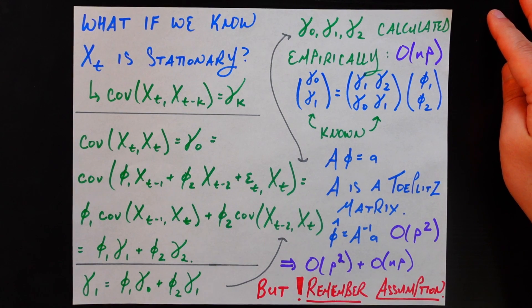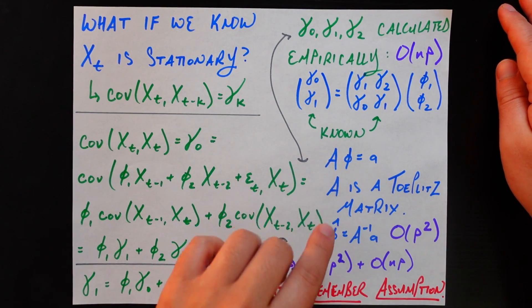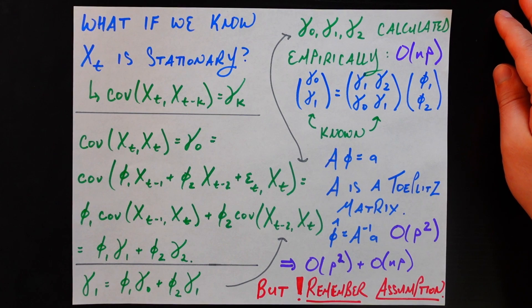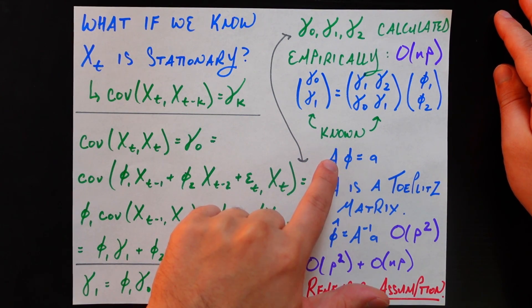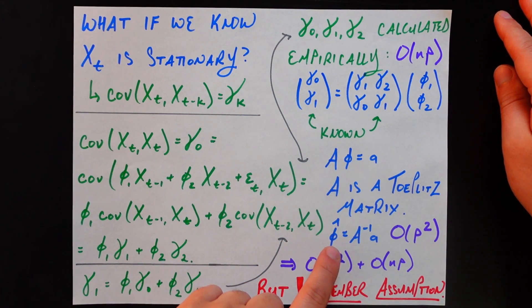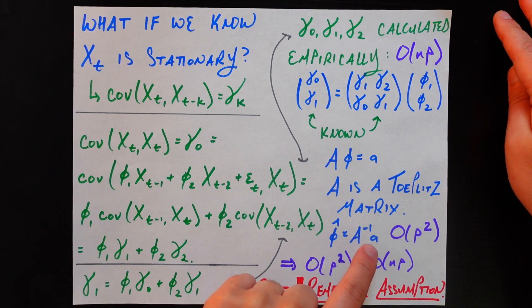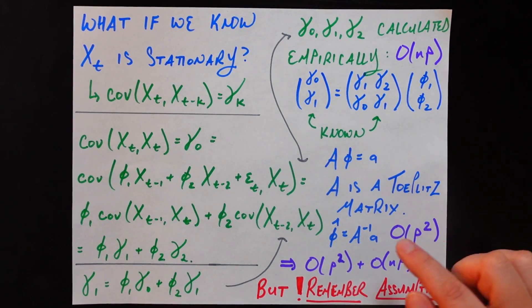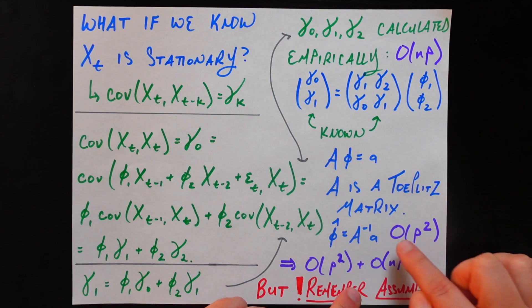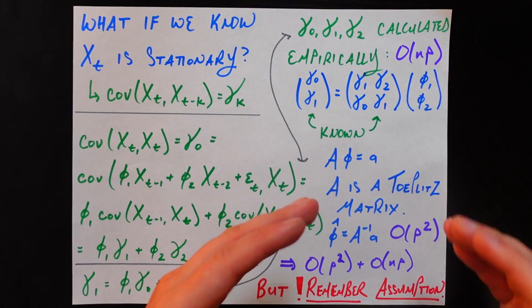So what that allows us to unlock is that we have this matrix vector multiplication, A phi is equal to little a. We can invert this matrix A. So we're going to get that the parameter estimates phi hat are going to be A inverse little a. And what was the computational complexity of that? Well taking the inverse of A is going to be O(P^2), thanks to the fact that it's a Toeplitz matrix. And then what is the multiplication of a P by P? And then what is the dimension of A going to be? A is going to be P elements as well. So that's going to be P squared as well, so still O(P^2).